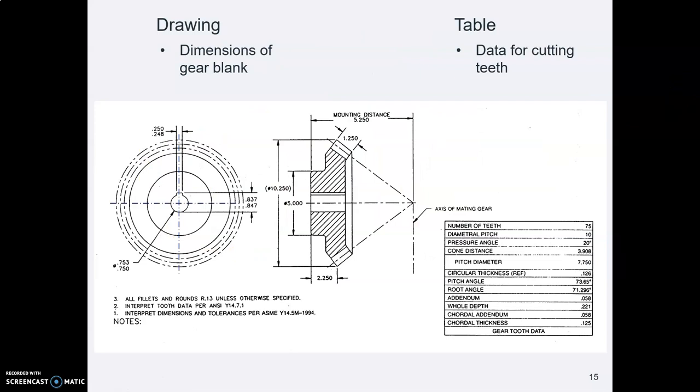As with a spur gear, you put dimensions on some things and gear cutting data in a table. The dimensions show what are the sizes and shapes of the gear blank before someone cut those teeth in a gear hobber.